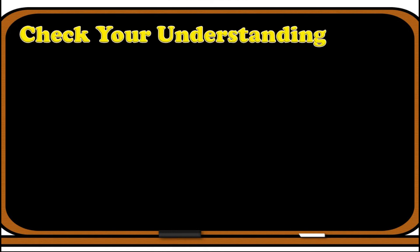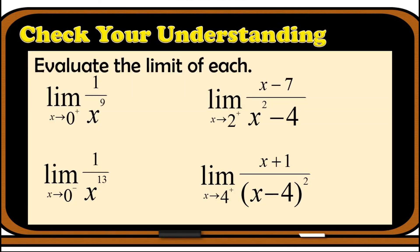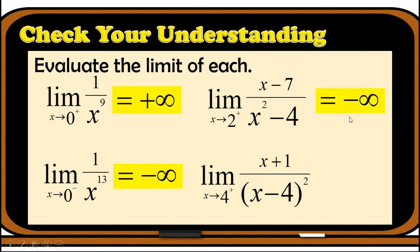This is now the time to check your understanding. You may pause the video to answer the problems. The first answer is positive infinity — since the exponent is a positive integer and you approach 0 from the right. The second answer is negative infinity — since the exponent is odd and you approach 0 from the left. The third answer is negative infinity — negative over positive gives negative infinity. The fourth answer is positive infinity — positive over positive gives positive infinity.